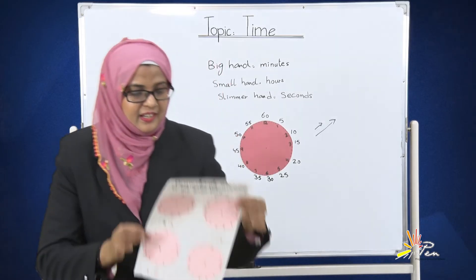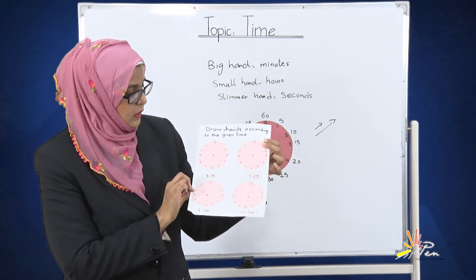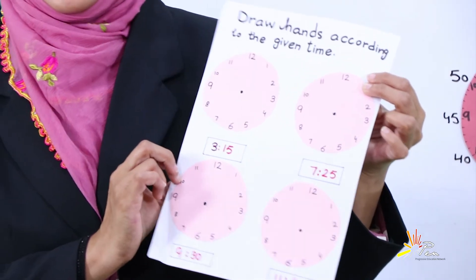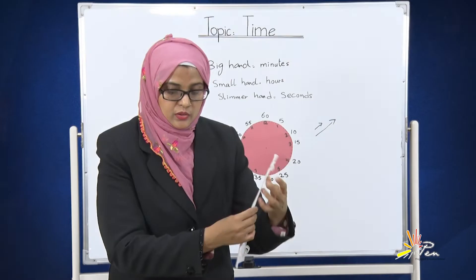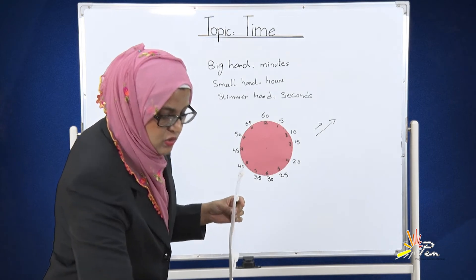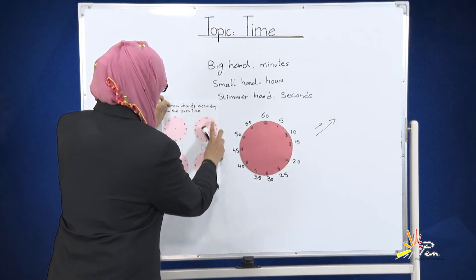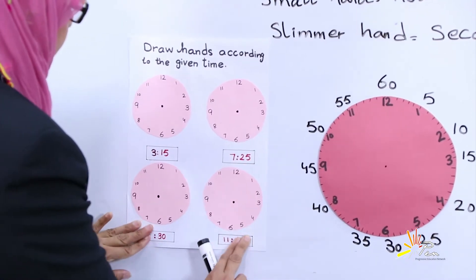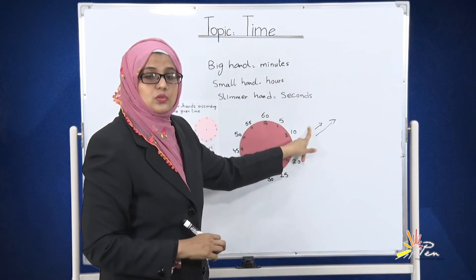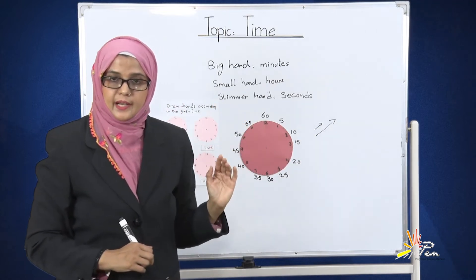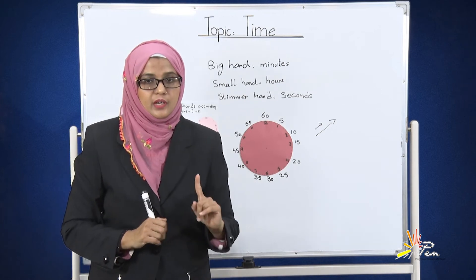Okay students, here I have some more clocks in my hand. On this paper, four clocks have been shown and the time is already given. Your task is just to draw hands on these clocks. We will use two hands: smaller hand and bigger hand. Smaller hand for hours and bigger hand for minutes.